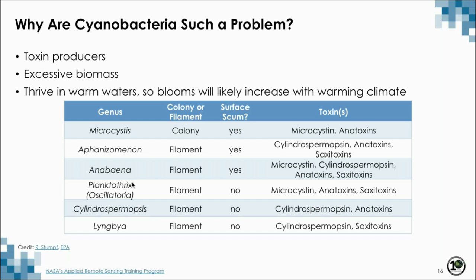Many of these genera are cosmopolitan, meaning they can be found globally. I'd like to direct your eye to the column titled surface scum. The reason we highlight that column is that surface scums are emergent, meaning they ride at the surface of the water and often do not have much water overlying them. This means that remote sensing reflectance in the near infrared and shortwave infrared can be exploited in remote sensing algorithms to detect these genera.